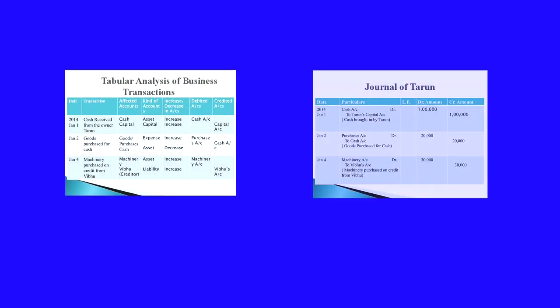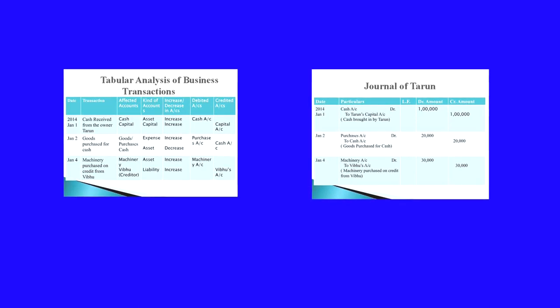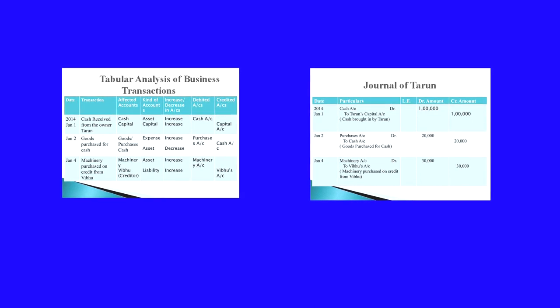A journal entry will be made in the journal along with a brief explanation known as narration. The corresponding amounts will be written in the debit and credit columns. After completing one entry, a horizontal line is drawn before the next transaction entry is made. Now let us analyze the transactions given in the PPT. The first transaction is on January 1st: cash received from the owner Tarun.